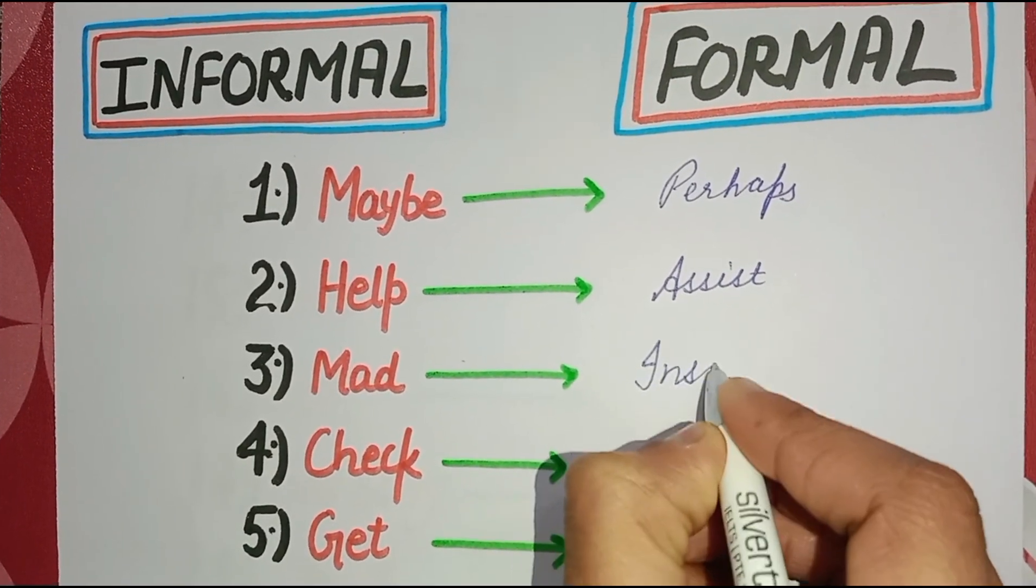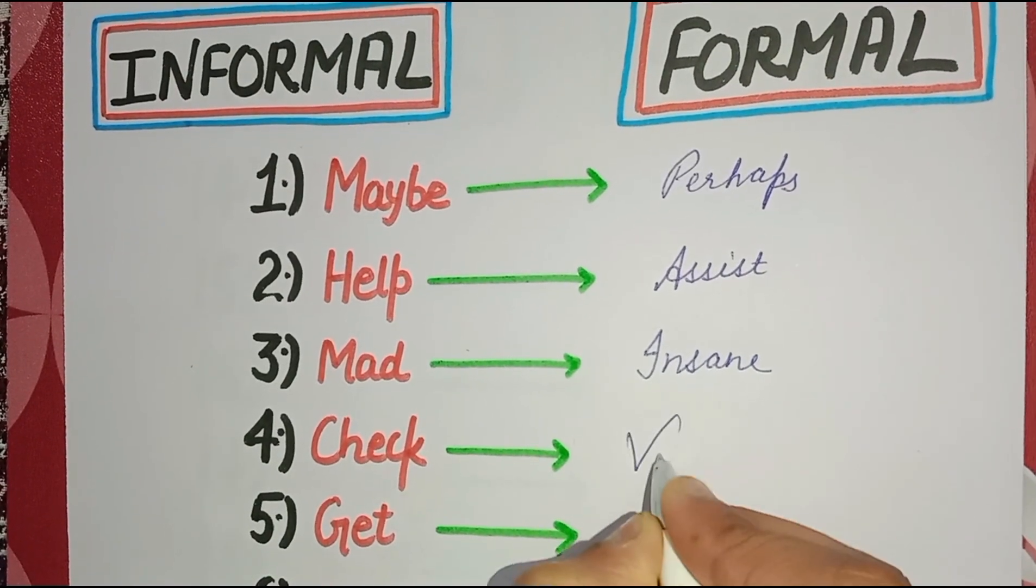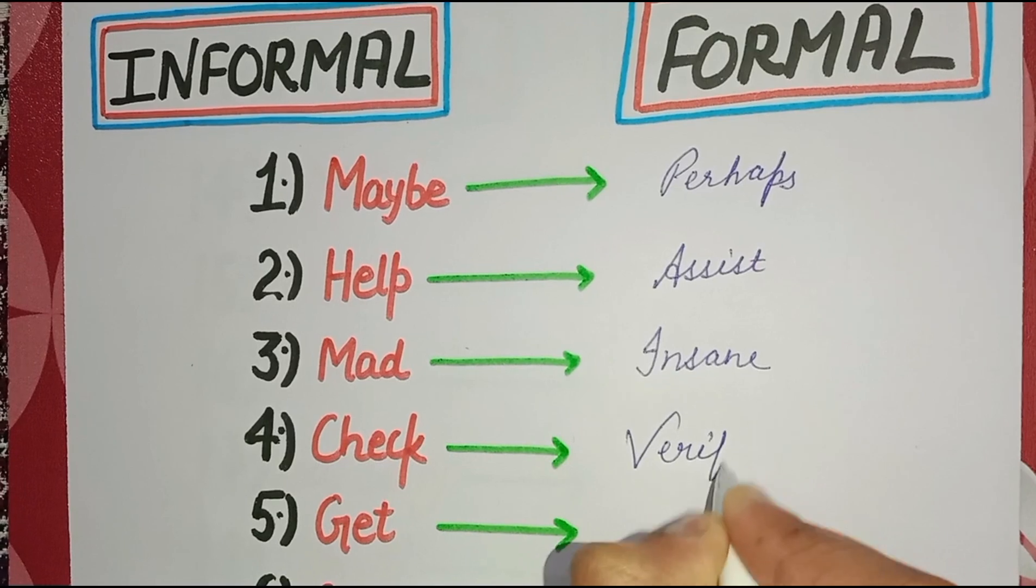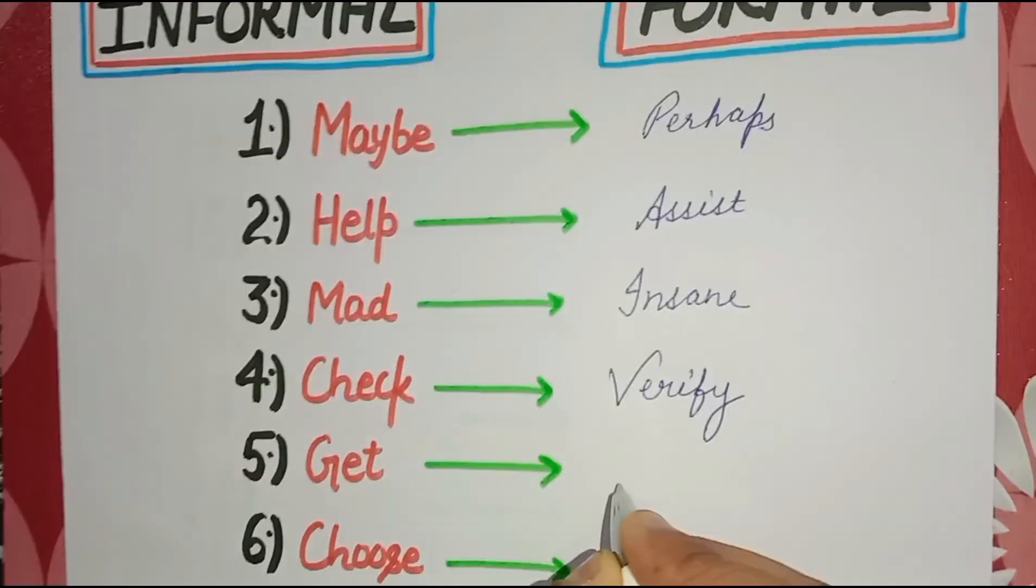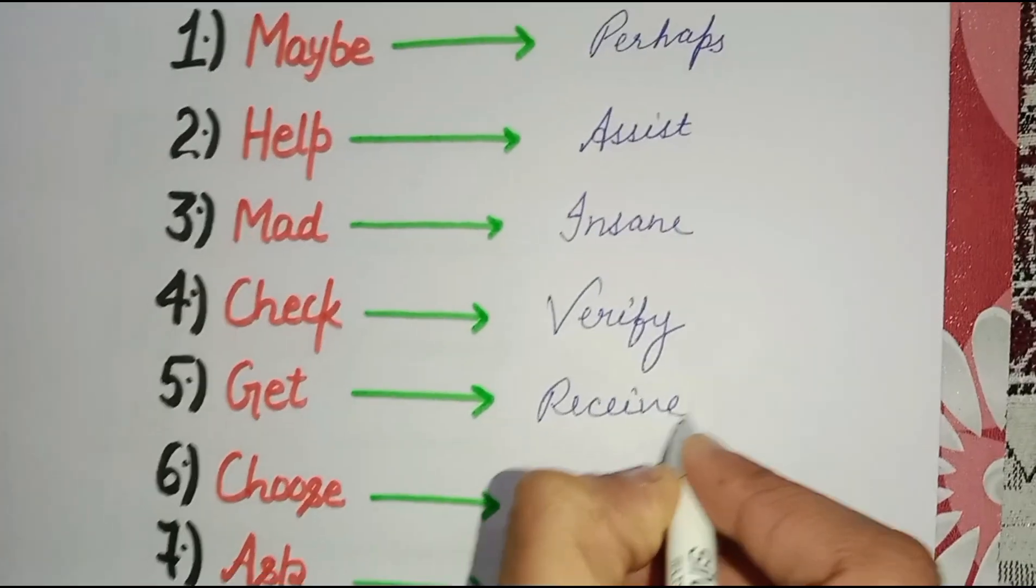Fifth is 'get' - 'receive'. The formal word is 'receive'.